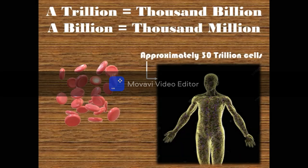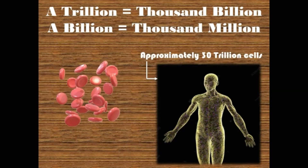Now let's start the cell. The human body is composed of trillions of cells. A trillion is equal to a thousand billion, and a billion is equal to a thousand million. So now you can understand the number of cells our body is composed of.